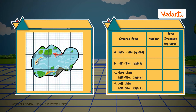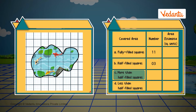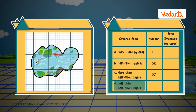How many fully filled squares are there? Yes, 11. Let's now count half filled squares: one, two, three. And how many more than half filled squares do we have? One, two, three, four, five, six, seven. How many less than half filled squares? One, two, three, four, five.